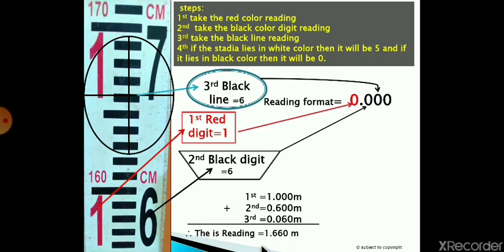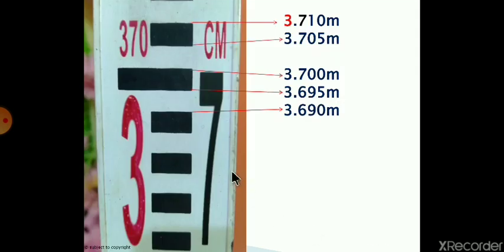Here are some examples of reading. For example, here it is 3.7, so 3.7 indicates 3.700. Here it is 3.700 plus 0.005, and in this way this reading will be 3.705, and this reading will be 3.710. We are just adding 0.005.